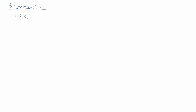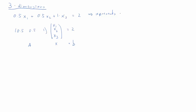Let's see how these principles translate to the three-dimensional case. We'll start with a three-dimensional equation system — now we have three coordinates: X1, X2, and X3. Starting with one equation, we can represent it in matrix-vector form as A times X equals B, where A is a row vector — a 1 by 3 matrix. This one equation represents a plane in a three-dimensional coordinate system.